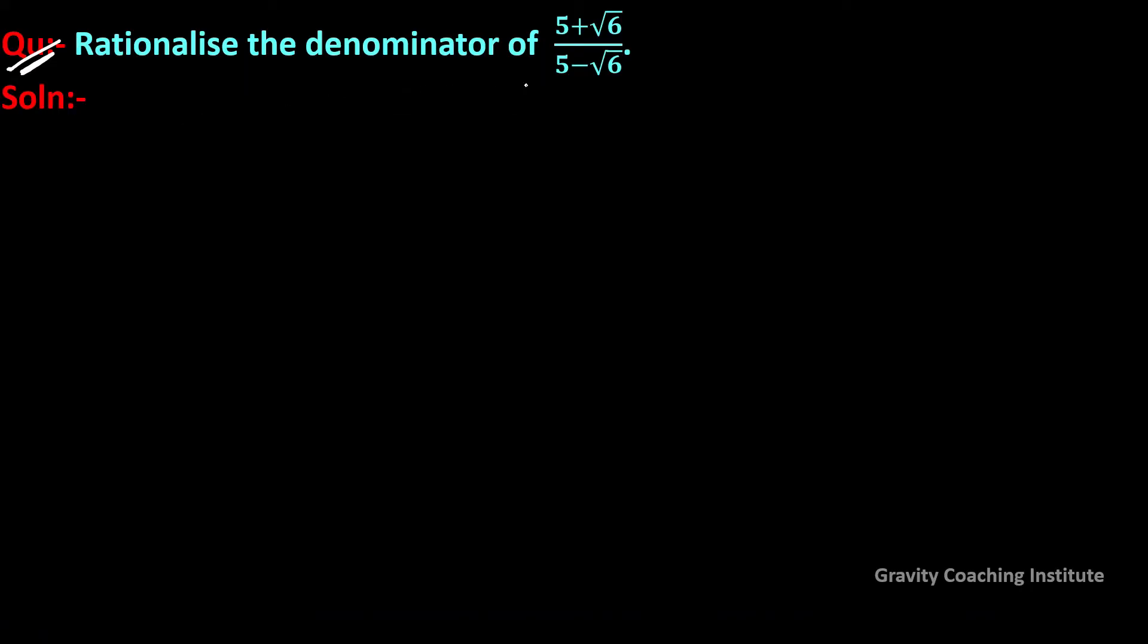Question: Rationalize the denominator of (5 + √6)/(5 - √6). We start with (5 + √6)/(5 - √6) equals (5 + √6)/(5 - √6).